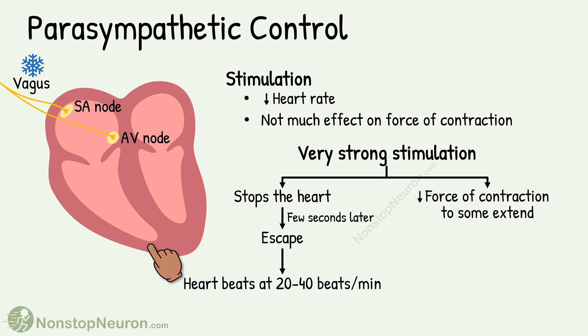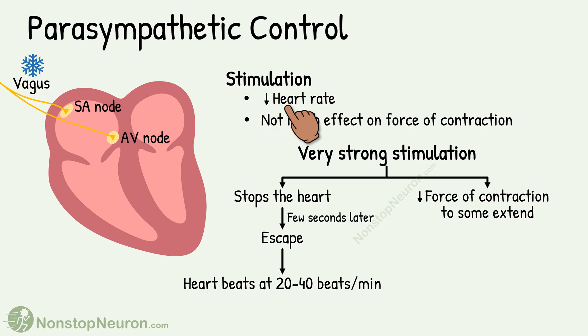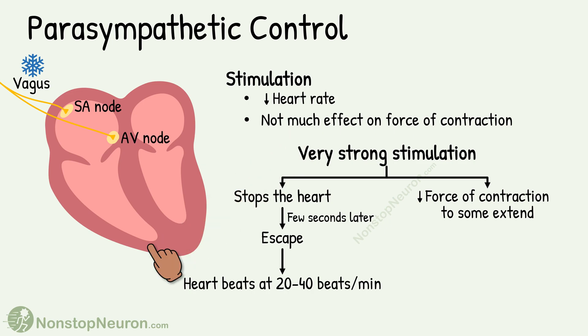The duty of the parasympathetic nervous system is to calm down the heart. Stimulation of parasympathetic nerves results in a decrease in heart rate, due to the effect on the SA node. There is not much effect on the force of contraction because the ventricular muscles do not receive significant parasympathetic innervation.